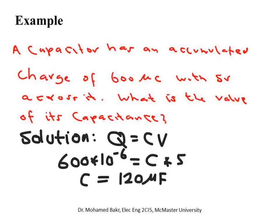Here is an example. A capacitor accumulated a charge of 600 microcoulombs on the positive electrode when 5 volts was applied across it. Using Q = CV: 600×10⁻⁶ = C × 5. Solving gives C = 120 microfarads. This is a very simple example illustrating the first fundamental relationship Q = CV.